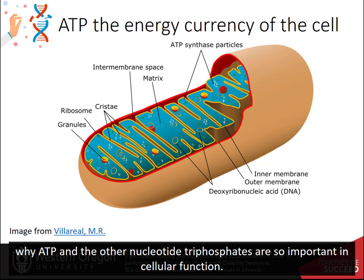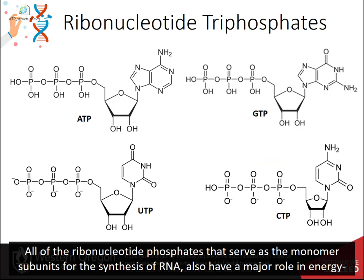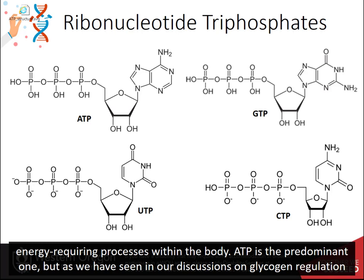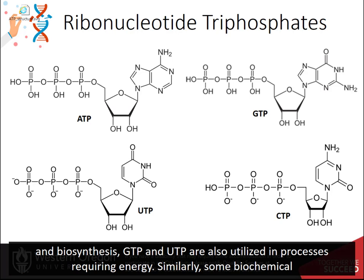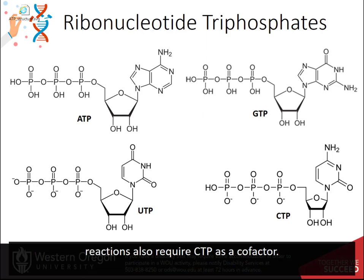All of the ribonucleotide phosphates that serve as the monomer subunits for the synthesis of RNA also have a major role in the energy-requiring processes within the body. ATP is the predominant one, but as we have seen in our discussions on glycogen regulation and biosynthesis, GTP and UTP are also utilized in processes requiring energy. Similarly, some biochemical reactions also require CTP as a cofactor.